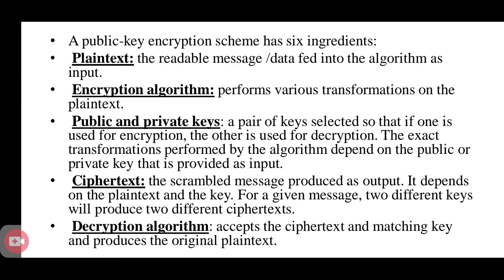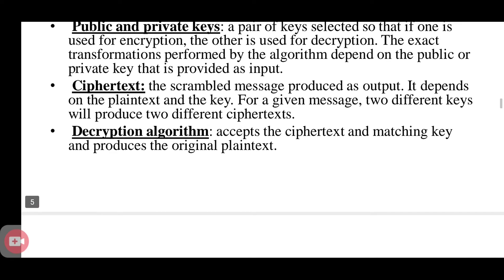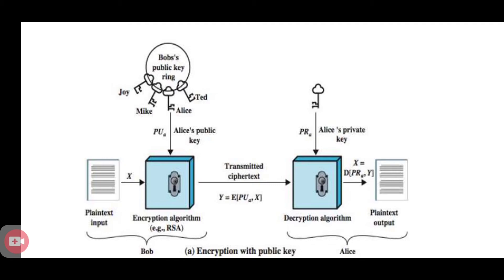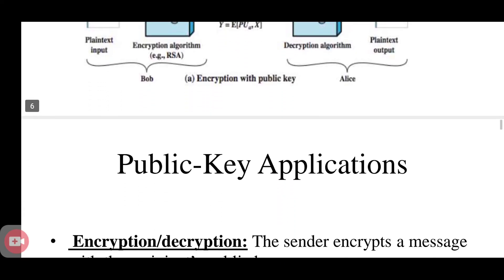The six ingredients of public key cryptography are: plain text, encryption algorithm, decryption algorithm, ciphertext, public key, and private key. The private key is kept secret and the public key is publicly available. In the figure illustrating public key cryptography, we have PU representing the public key and PR representing the private key, where the receiver is Alice.